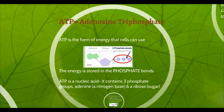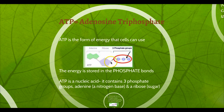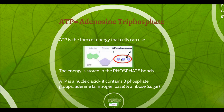The energy in this ATP molecule is actually stored in a phosphate bond. If you look here, we have our adenine — that's our nitrogen base. We have a ribose here, which is a type of sugar. And then here, these three little Ps are the phosphate groups. The lines representing the bonds between the phosphates are those chemical bonds, and that's where the energy is stored. The energy from ATP that our cells use is stored in these bonds right here.